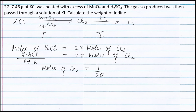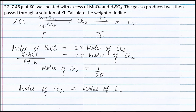From the second part of the reaction, one mole of chlorine forms one mole of iodine. Therefore we can write moles of chlorine is equal to moles of iodine, which is equal to 1/20 moles.